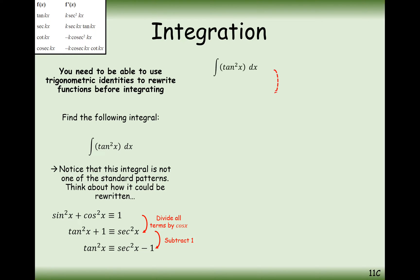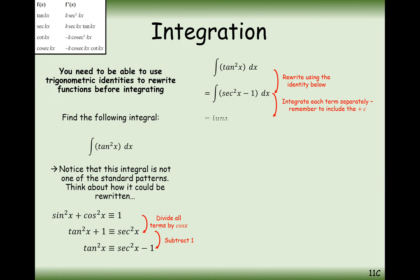Integrating tan squared is not done by integrating tan squared directly. It's done by integrating sec squared minus 1 — replacing what we're integrating with something equivalent using a trig identity. Sec squared integrates back to tan. And then a number doesn't just disappear like it does in differentiation — it goes to minus x. Then we plus c afterwards.